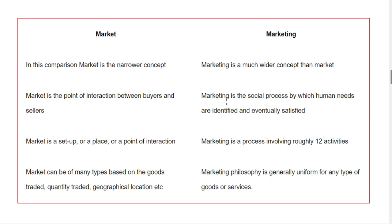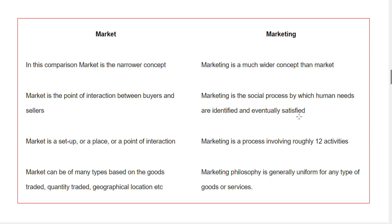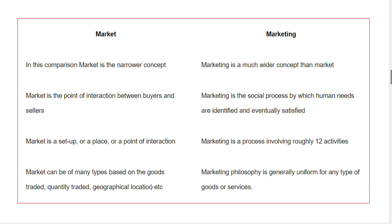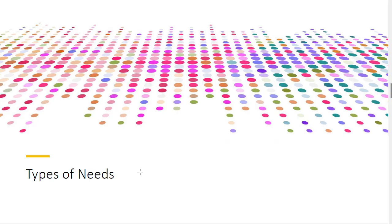Comparing market and marketing: market is a narrow concept while marketing is a much wider concept. Market is the point of interaction of buyers and sellers. Marketing is a social process where we identify, evaluate, and satisfy needs. Market is a set or place — a point of interaction. Marketing is a process involving various activities. Market involves type of activity, goods traded, services, quantity, and geographical location. Marketing is generally uniform and covers any type of goods or services.